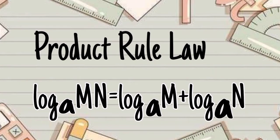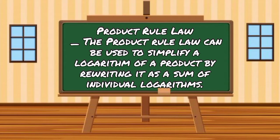Product rule law: Logarithm mn with base a equals logarithm m with base a plus logarithm n with base a. A product rule law can be used to simplify a logarithm of a product by rewriting it as a sum of individual logarithms.